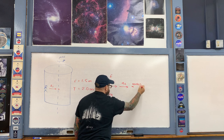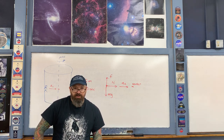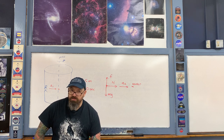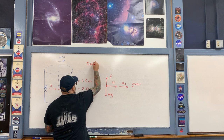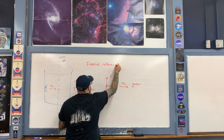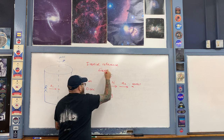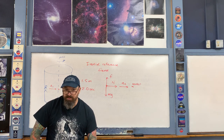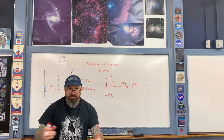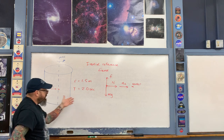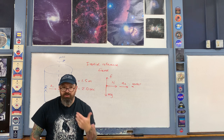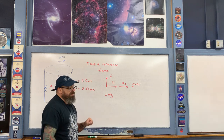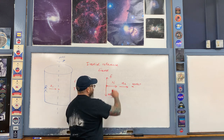Throughout this unit on dynamics, when setting up F = ma we've been using an inertial reference frame. An inertial reference frame is a reference frame that is at a constant velocity — usually assumed to be at rest — as if we're just here in this room watching the rotation occur and describing the forces acting on the person.